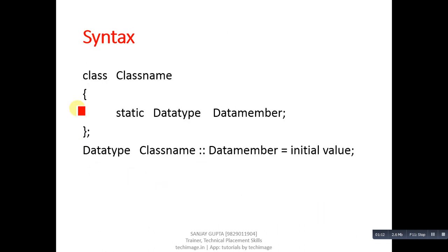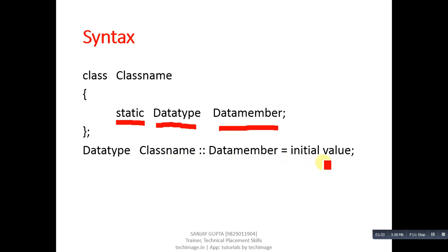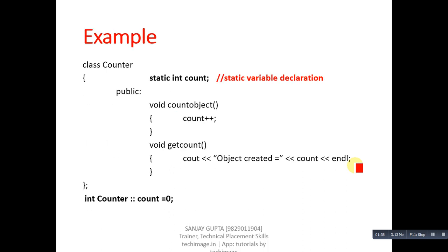Now coming to the syntax of static data. To declare a static variable, use the keyword static, then the data type, then the variable name. You can also initialize a value to the static variable using this syntax: data type, class name, scope resolution operator, variable name, equals to, initial value.